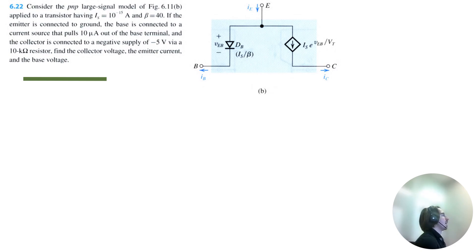If the emitter is connected to ground, the base is connected to a current source that pulls 10 microamps out of the base terminal and the collector is connected to a negative supply of negative 5 volts via a 10 kilo ohm resistor to find the collector voltage, the emitter current, and the base voltage.